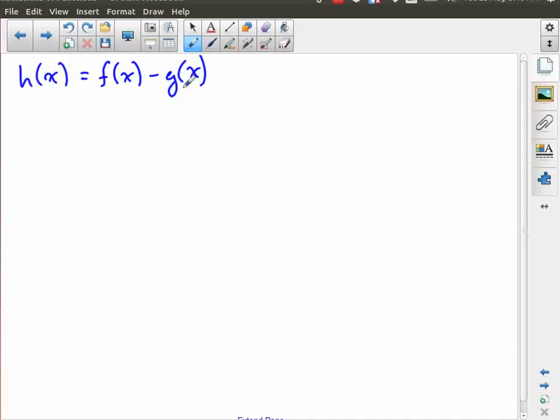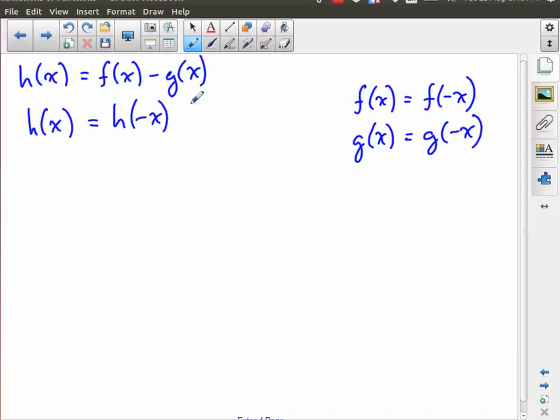So we've got h of x is equal to f of x minus g of x. And I've started off with both of these being even. So we're actually going to make use of the definition of even, which is that we know that f of x is the same as f of negative x. That's the definition of even. And we know that g of x is equal to g of negative x. And so the question is, we want to know, is h of x equal to h of negative x? That's our question, because we want to know whether or not this is even.